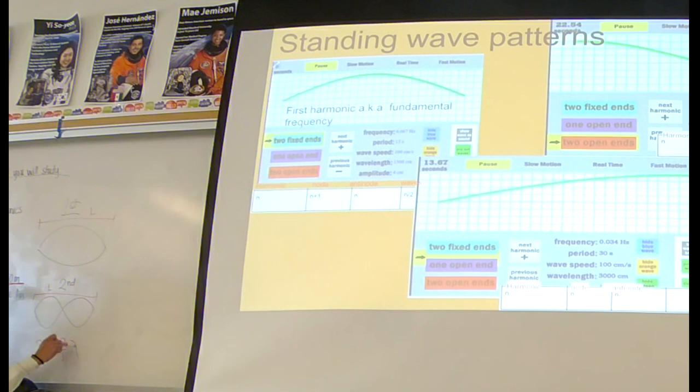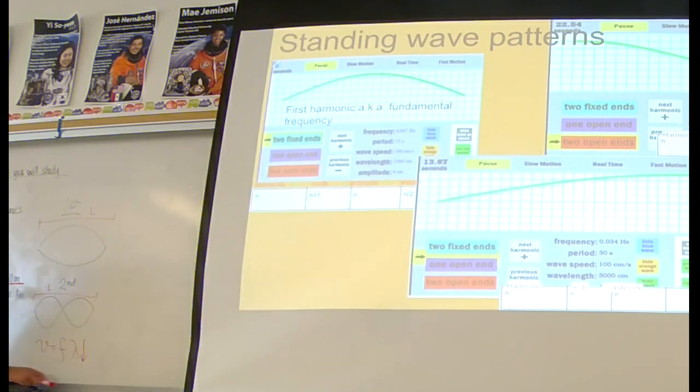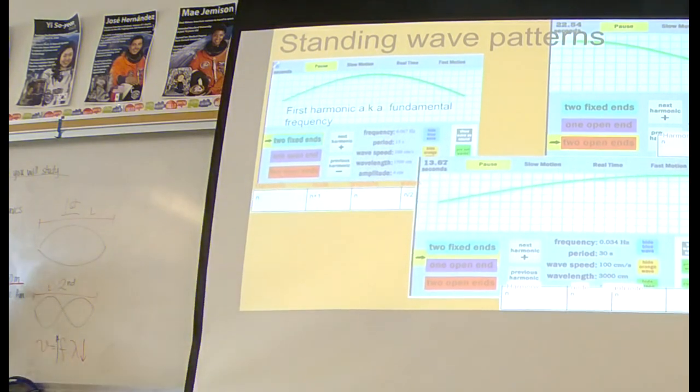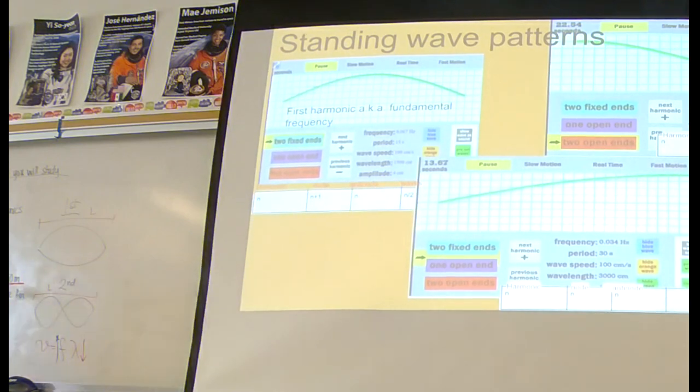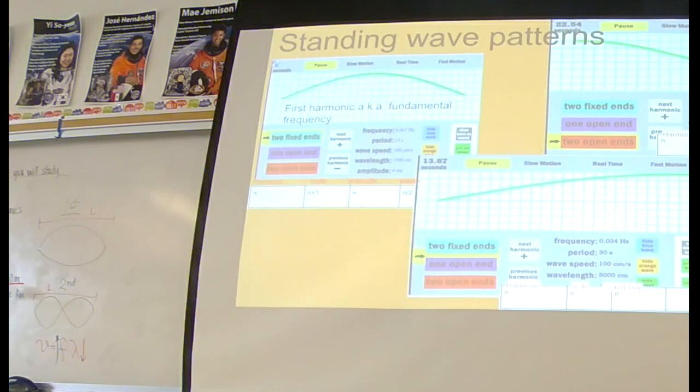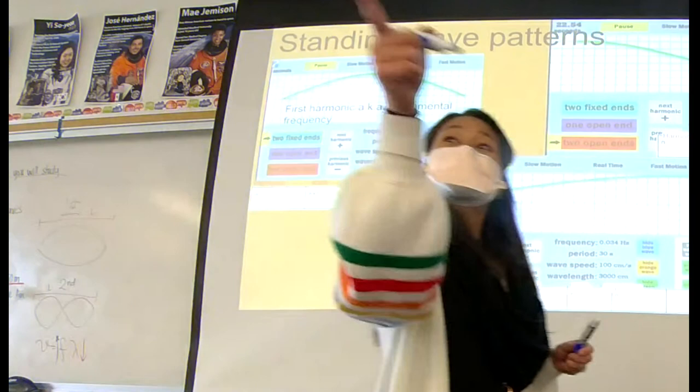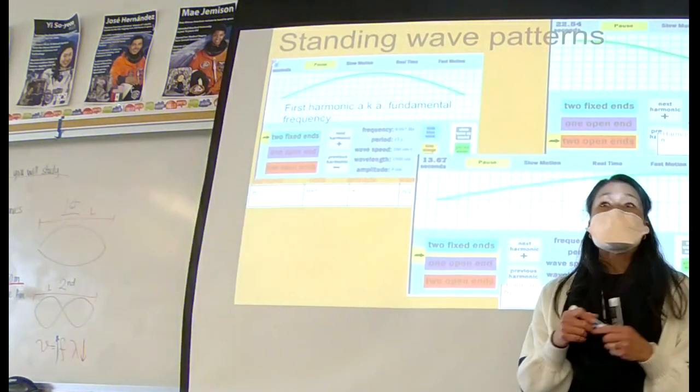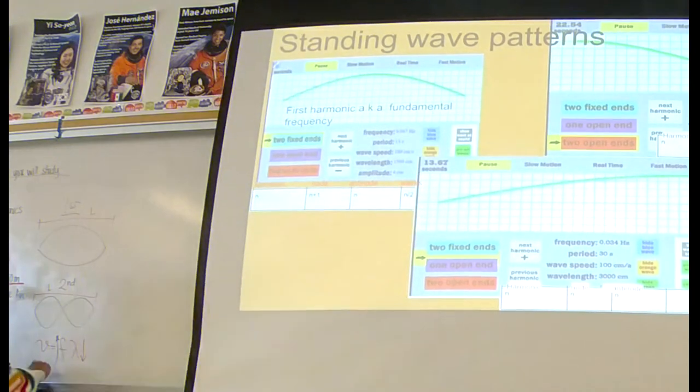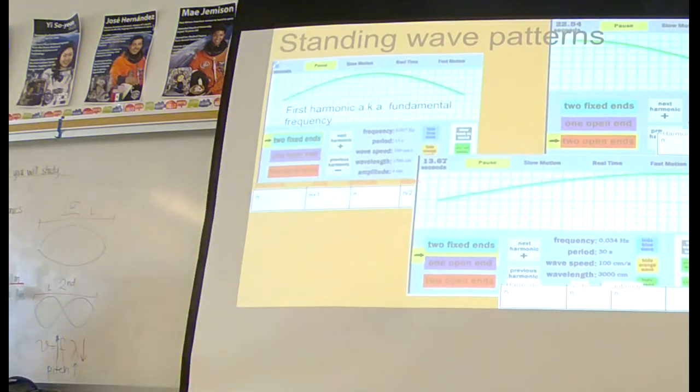Wavelength equals frequency, or sorry, velocity equals frequency times wavelength. The speed of a string or the speed of sound doesn't change. But if my wavelength decreases, what happens to my frequency? Increases. This was in your quiz. They're inversely proportional. And so if that increases, what happens to the pitch? The frequency increases, Mason? The frequency and the pitch are directly related. And so pitch also increases. That's how we make music.